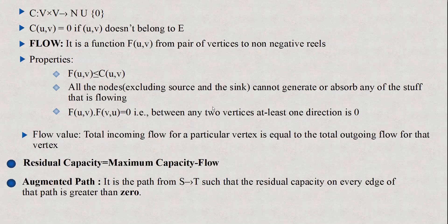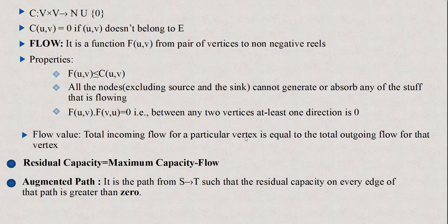Flow value: the total incoming flow equals total outgoing flow for internal vertices. Residual capacity is the remaining capacity between two vertices after flow has been augmented through a path. Residual capacity equals maximum capacity minus flow. Augmenting path is a path from source to sink such that the residual capacity of every edge along that path is greater than 0.